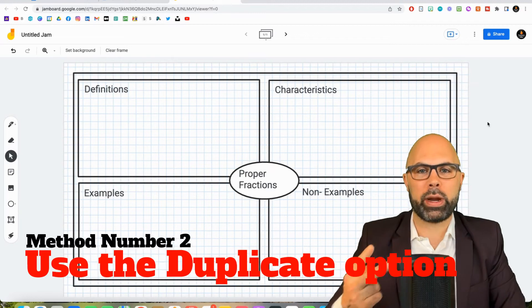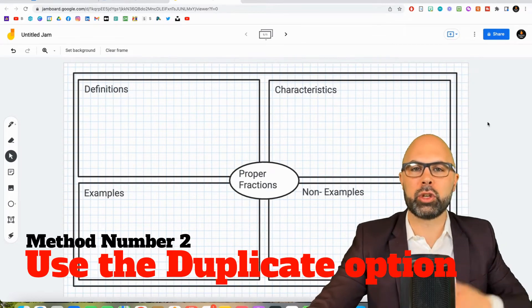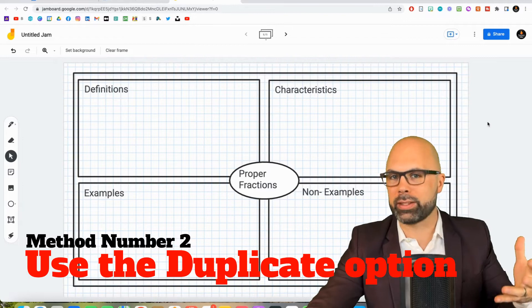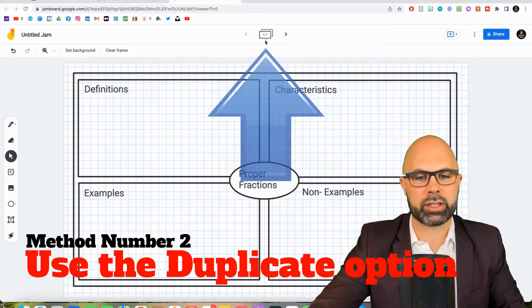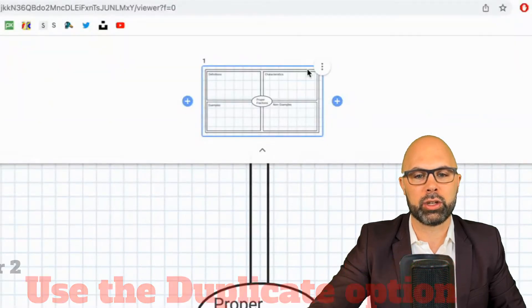All right. And the second way to add an additional slide is to duplicate, which can come really in handy if you have made something that you would like to use again and again. So to do that, you're going to hit this tiny arrow up here and select duplicate.